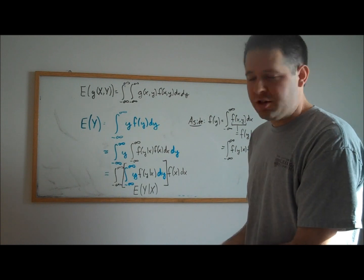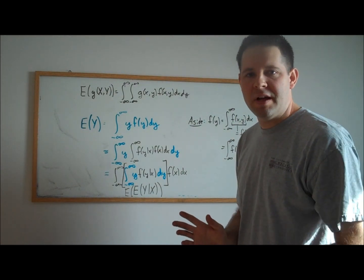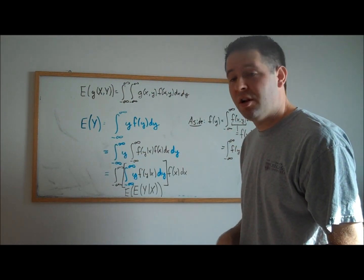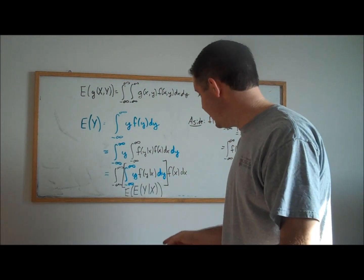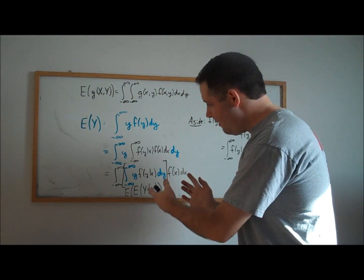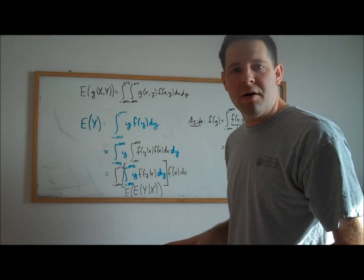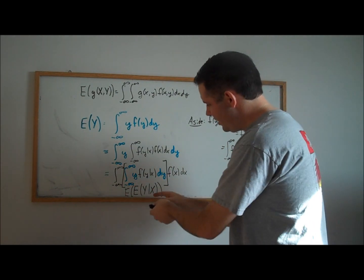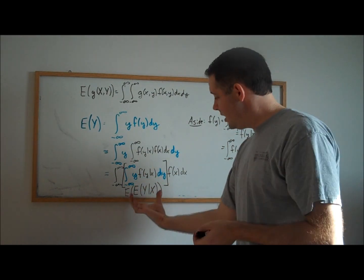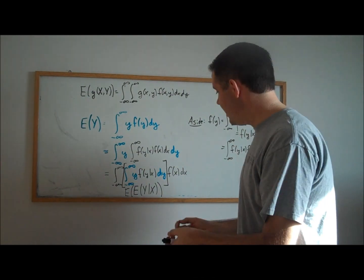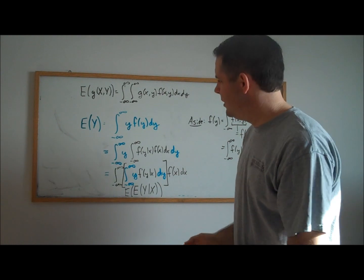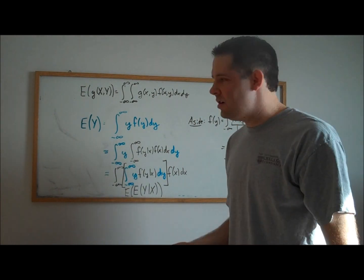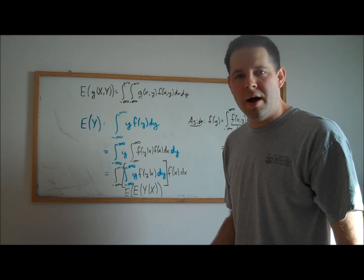This is a result known as the law of iterated expectations. You might not know anything about the unconditional expectation of y, but you might know something about the conditional expectation of y given x. If you know that, and you know the marginal PDF of x, then you can compute the inner integral first and then take the expectation on the outside with respect to the marginal PDF of x — no need to know anything about the marginal of y.